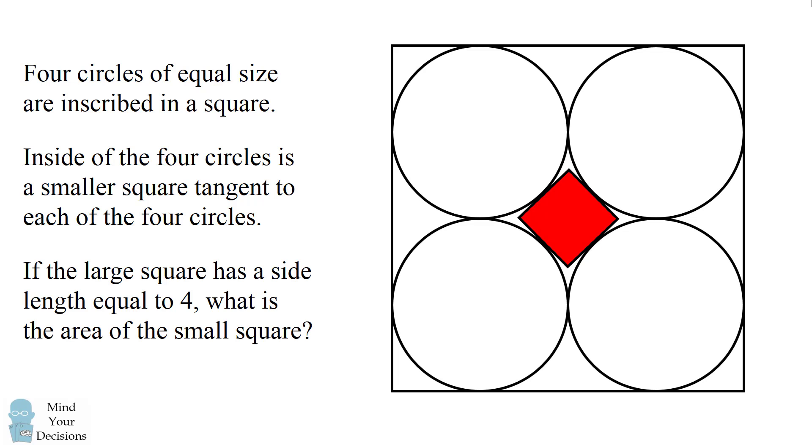If the large square has a side length equal to 4, what is the area of the small square? Can you figure it out? Give this problem a try and when you're ready keep watching the video for the solution.